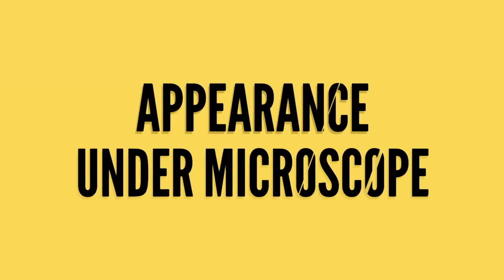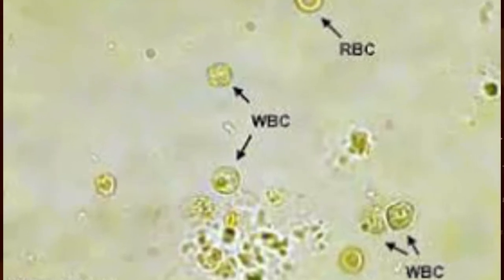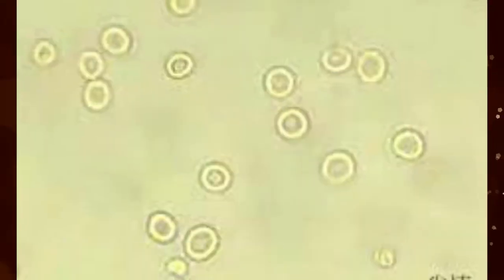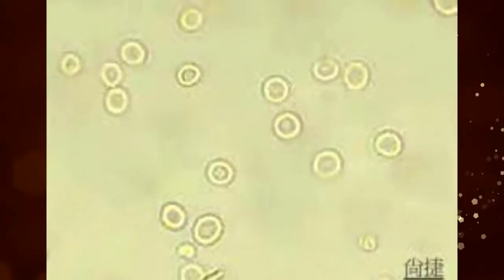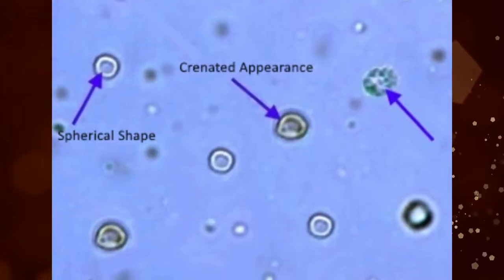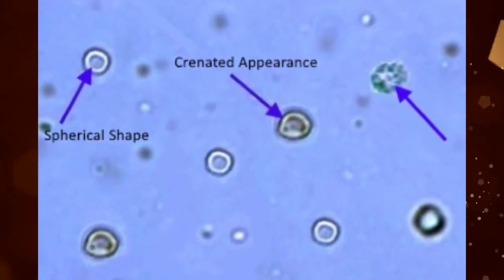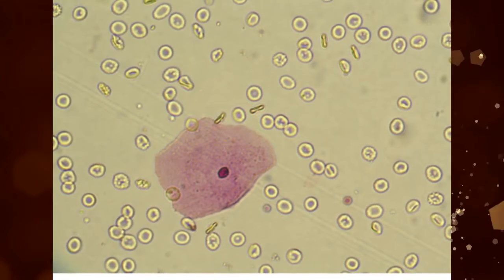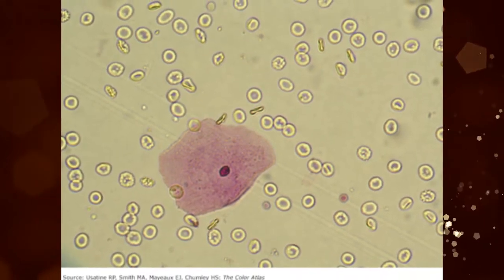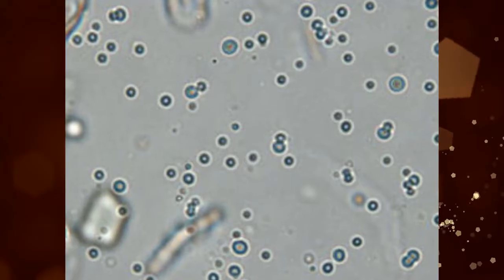Appearance under microscope: Red blood cells are smaller than white blood cells and do not have nuclei. They may be disc or spherical shaped, or may have a spiked or crenated appearance. Usually in concentrated urine, the cells shrink due to loss of water and may appear crenated or irregularly shaped.